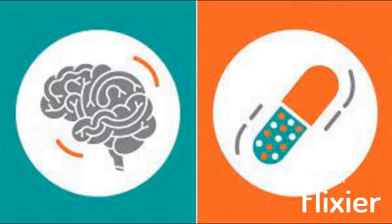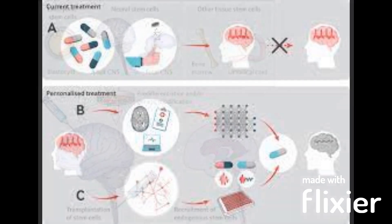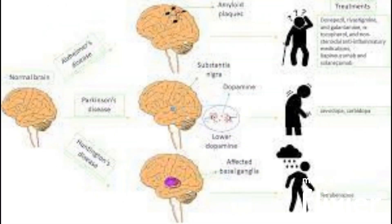نمبر دو: علاج کی پلاننگ — یہ سکین ڈاکٹرز کو بعض دماغی امراض جیسے مرگی کے علاج کی بہترین منصوبہ بندی کرنے میں مدد کر سکتا ہے۔ غیر معمولی برین ایکٹیویٹی کے علاقوں کی نشاندہی کر کے ڈاکٹرز ان علاقوں کو دواؤں یا دیگر علاج سے ڈائریکٹلی ہدف بنا سکتے ہیں۔